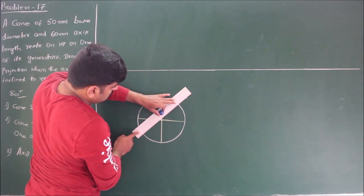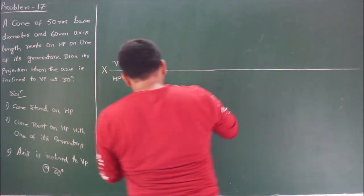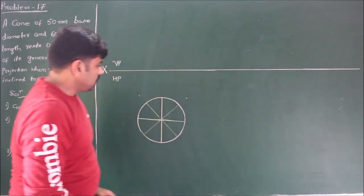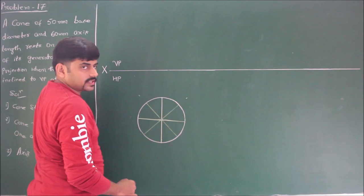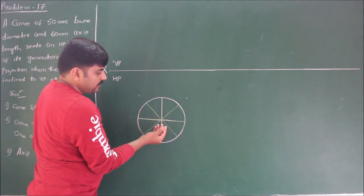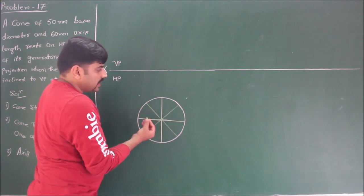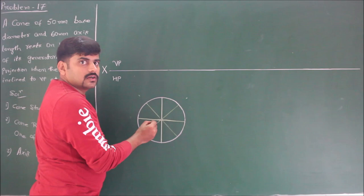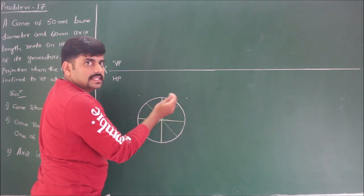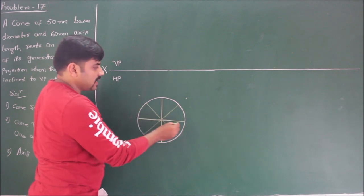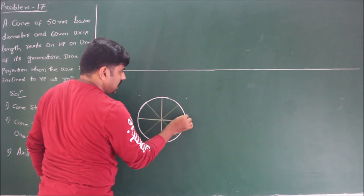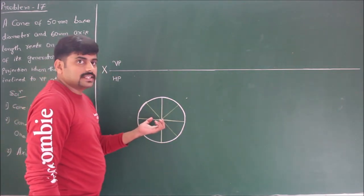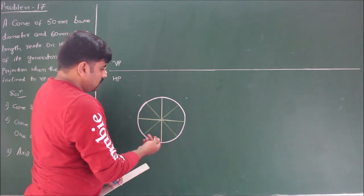First divide the circle into four portions, then mark 45 degrees on either side and divide further to get eight points on the circumference. These lines drawn are only for our convenience and should be very thin lines — these are imaginary lines used to make further steps easier. The circumference of the circle should be a very thick dark line, whereas these are thin projection lines.